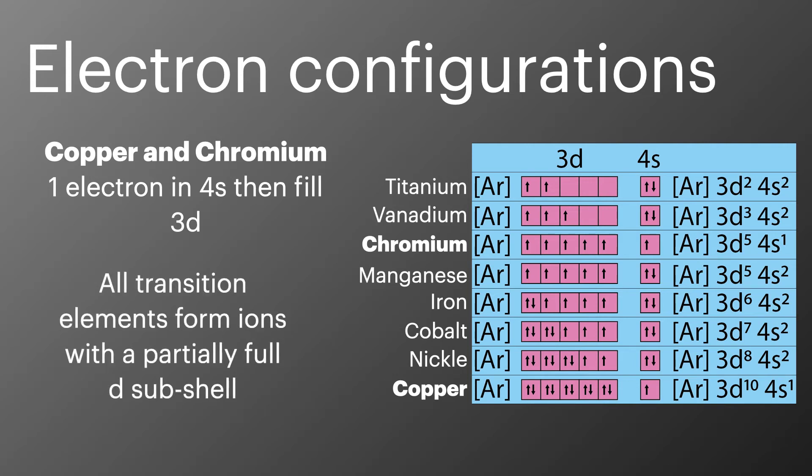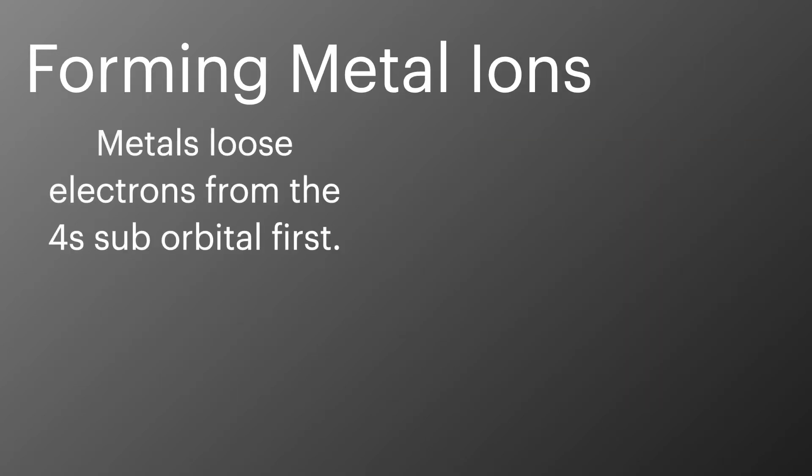All of the transition metals go on to form ions with partially filled D subshells. When transition metals form ions, they lose their electrons first from their 4s subshell. For cobalt oxidizing to cobalt 2+, it loses its 4s subshell completely.